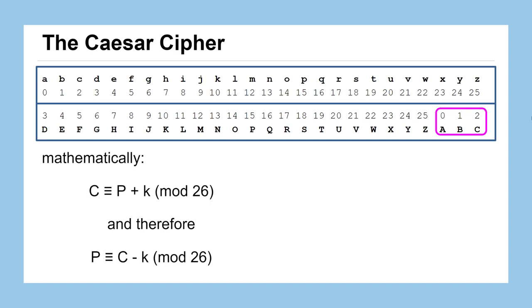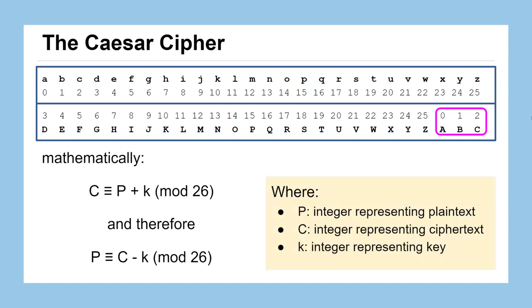Now mathematically, we could write this statement here. We could say that C is equivalent to P plus K mod 26 or solving for P that P is equivalent to C minus K. Where P is some integer that represents our plaintext letter, C is some integer that represents our ciphertext letter, and K is some integer that represents our key. So there's our mathematical way to define the Caesar cipher.